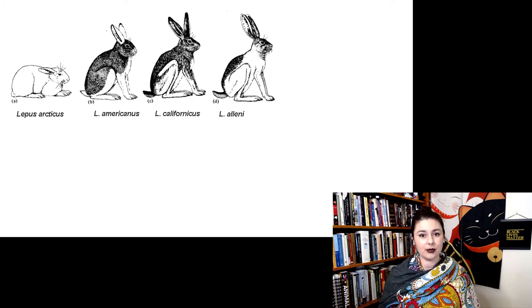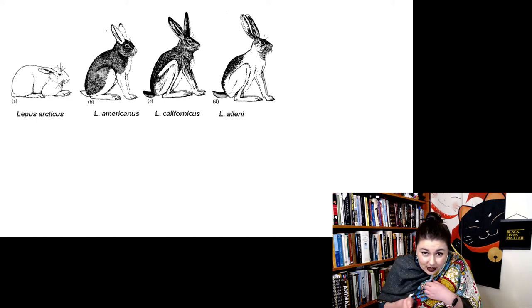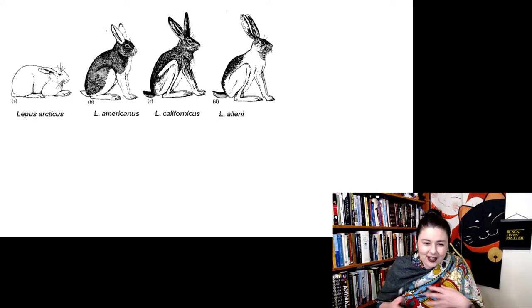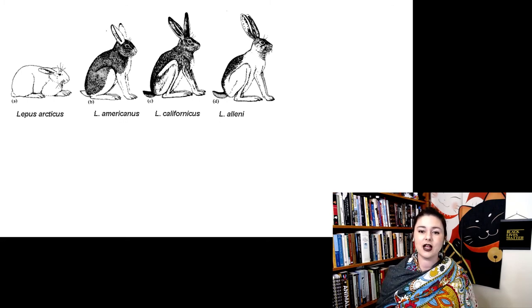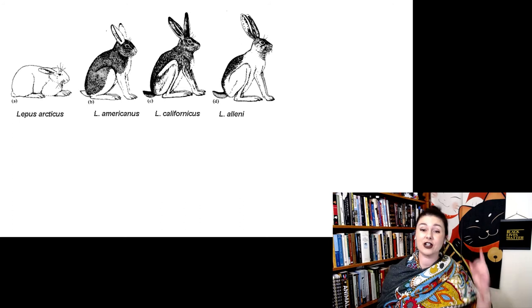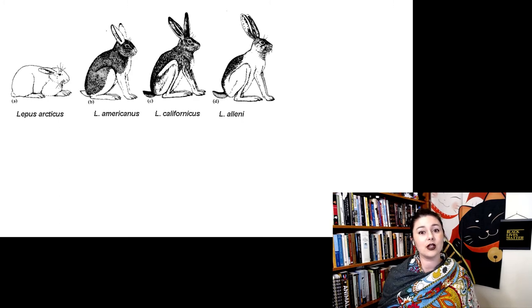Our Lepus arcticus, that is an arctic hare. First, you notice that all of its extremities, arms and legs and ears are much shorter. It also has some behavioral adaptations, holding everything close in. These other forms of hares are in progressively hotter climates. Now their limbs are much longer and they have their ears standing upright. This is a way that they can dissipate heat because if you live in a warmer climate, you want to make sure to lose as much heat as possible.